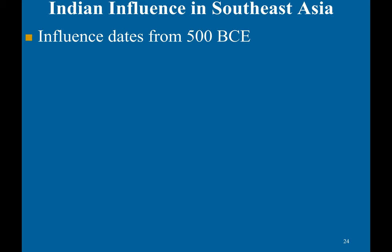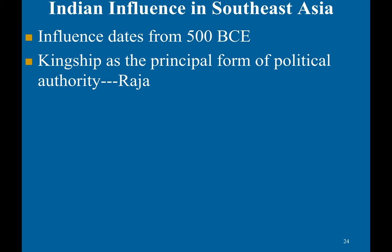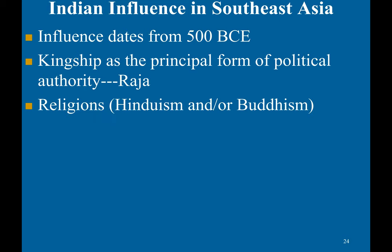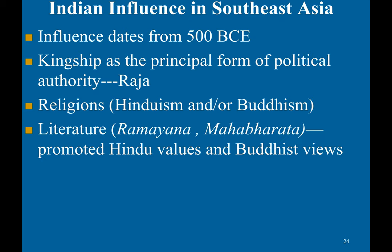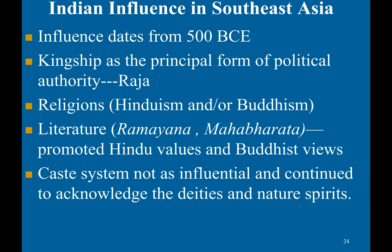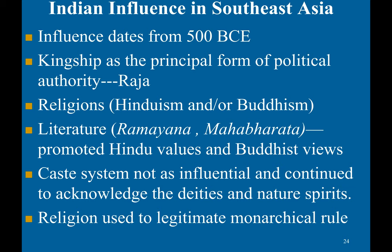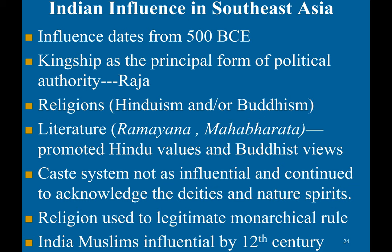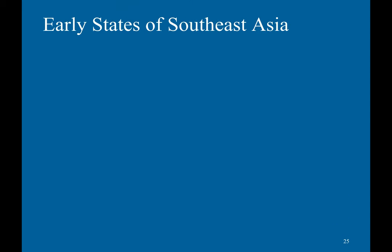Indian influence in Southeast Asia dates from 500 BCE. From India came kingship as the principal form of political authority, known as the Raja, as well as the influence of Hinduism and Buddhism. Literature also spread, promoting Hindu and Buddhist values — including the Ramayana and the Mahabharata. However, the caste system was not as influential in Southeast Asia, which continued to acknowledge local deities and nature spirits. Religion was largely used to legitimize monarchical rule, and Indian Muslims were also becoming influential by the 12th century.